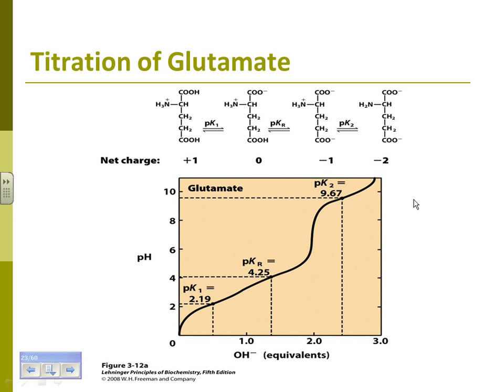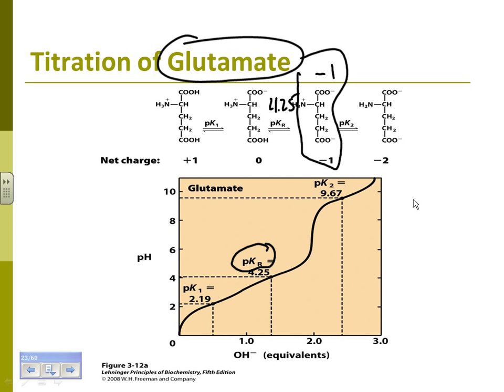When you have a third pKa group, it's called pKr — standing for the pKa of the R group. The pKr is about 4.25. An acidic amino acid like glutamate at normal pH of about 7 is going to be negative one. As you take it into a more acidic environment, it's going to become neutral. You can even go to positive one if you go below the pK1 number for the carboxylic acid group.